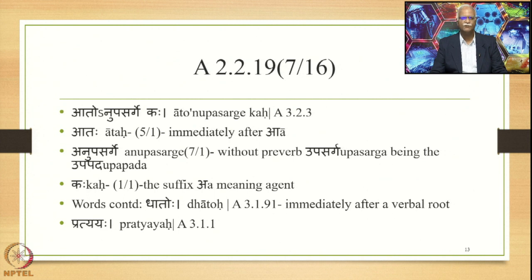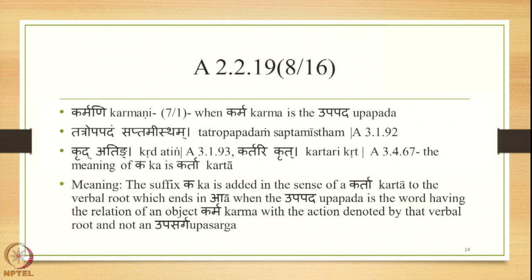Now let us go to 3.2.3 Aato Nupasarge Kaha. This Sutra has three Padas: Aataha, Anupasarge, and Kaha. Aataha is 5-1 of Aat meaning immediately after A. Anupasarge is 7-1 meaning without a Preverb or Upasarga being the Upapada. Kaha is 1-1 of Ka — suffix A meaning Karta or Agent. Words continued are Dhatoho from 3.1.91, meaning immediately after a verbal root; Pratyayaha from 3.1.1; Karmani continued meaning when Karma is the Upapada; and Kartari Krita 3.467 stating the meaning of the suffix as Karta.